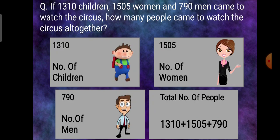Now the next question. If 1310 children, 1505 women and 790 men came to watch the circus, how many people came to watch the circus all together?